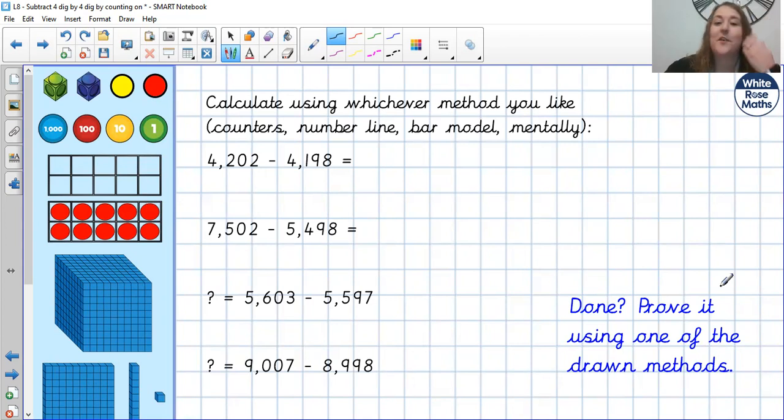Well done to those of you who had a go at those. Let's check the answers then. And I'm just going to do a number line because it helps. 4,202 take away 4,198. I'm going to start with my 4,198, and I'm going to count on until I get to 4,202. So 4,198, 4,199, 4,200, 4,201, 4,202. So I've done four jumps, so the answer is four.